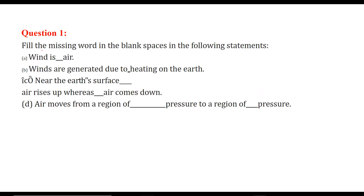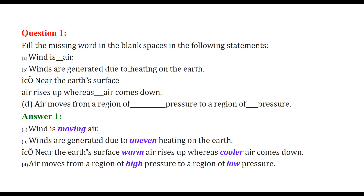First, fill in the missing word in the blank spaces. Wind is moving air or blowing air. Winds are generated due to uneven heating on the earth. Near the earth's surface, warm air always rises up whereas cooler air always comes down.